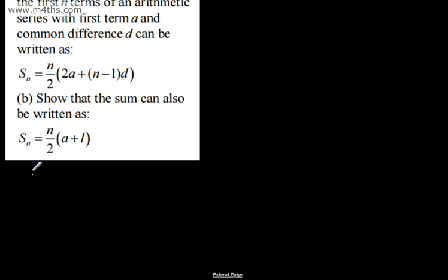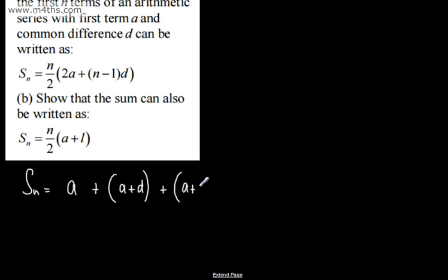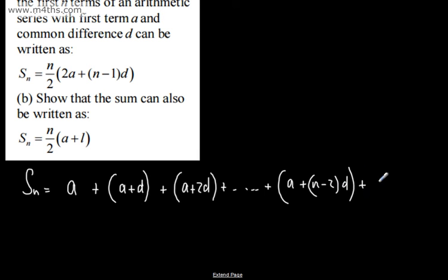All I'm going to do here is write it out manually. So the sum of n terms will be the first term a, plus the second term which will be a plus d, plus the third term which is a plus 2d, and then we go right the way up. The penultimate term is going to be a plus (n minus 2) multiplied by d, and then the final term, which is a plus (n minus 1)d.